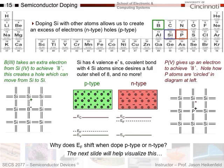How do we dope a semiconductor to alter the balance between holes and electrons? Silicon is in column 4 of the periodic table. Silicon bonds covalently to achieve an outer shell of 8 by taking its four outer-shell electrons and sharing one with each adjacent silicon atom. With four silicon atoms each sharing one electron, they all think they have 8 — a full outer shell.